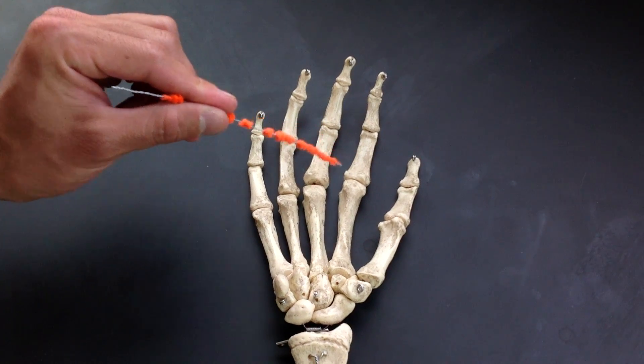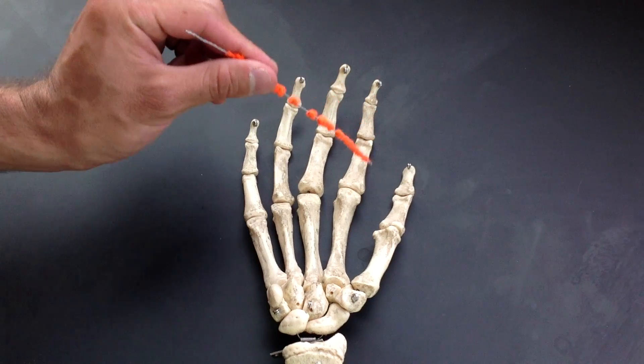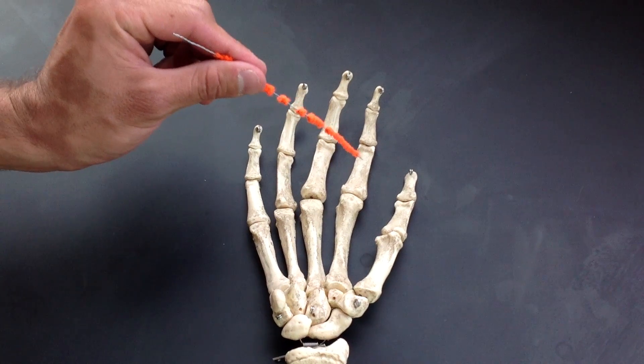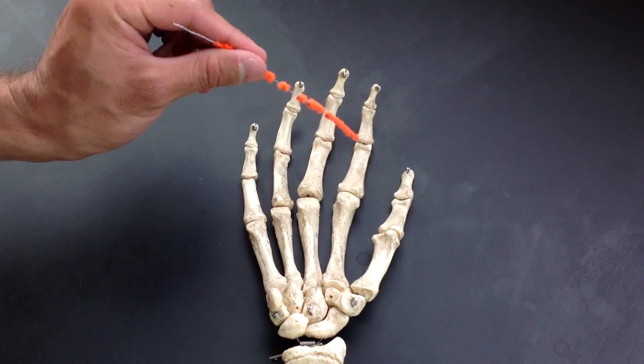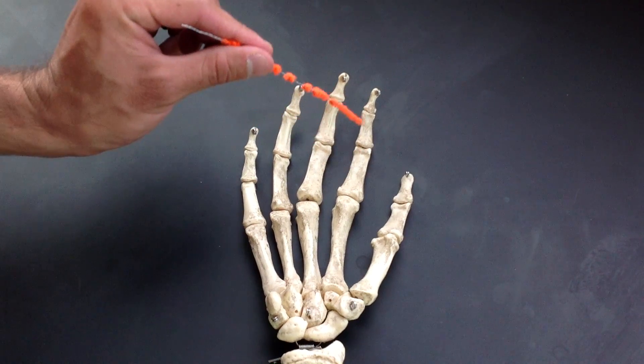And then with phalanges, you will have three phalanx per digit. You have a proximal phalanx, middle phalanx, and distal phalanx of the second digit.